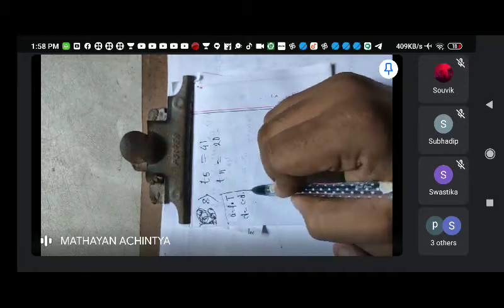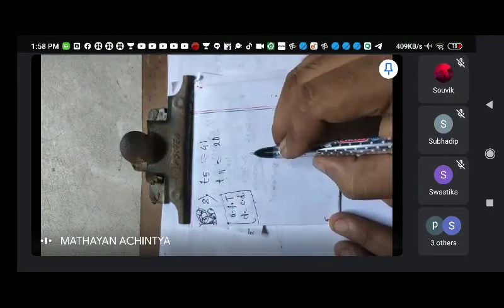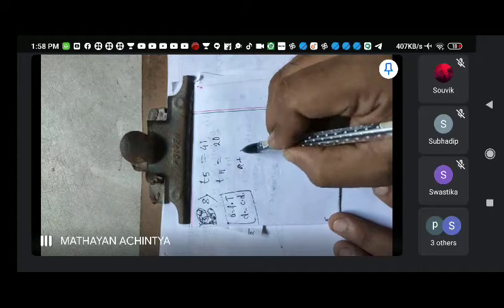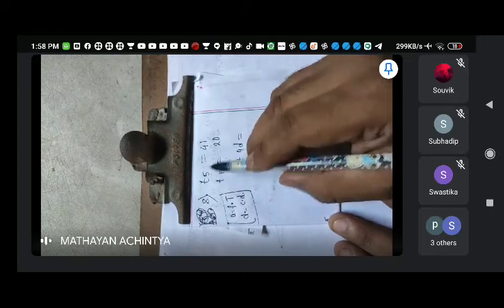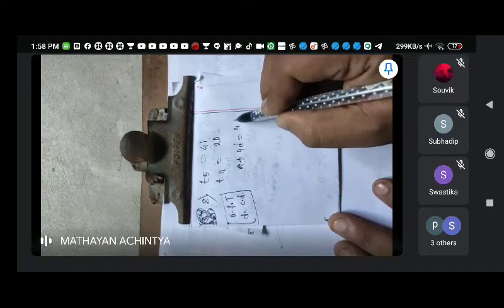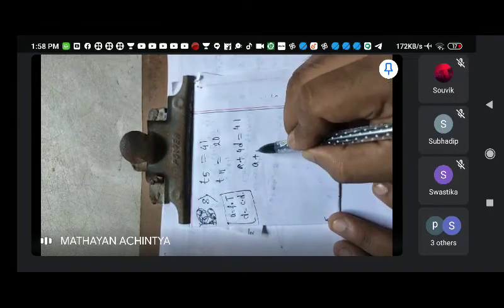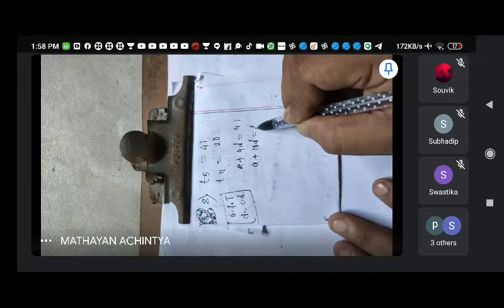I will notice the use column. A plus 4d, 5 minus 1 into d equals 41. A plus 10d equals 20.